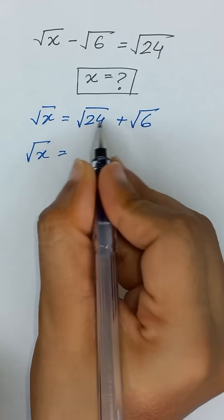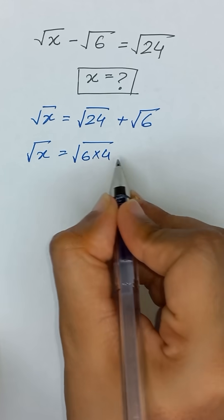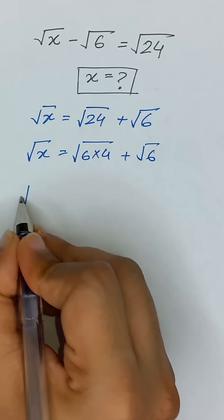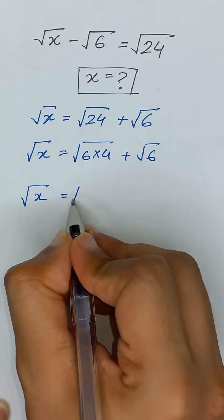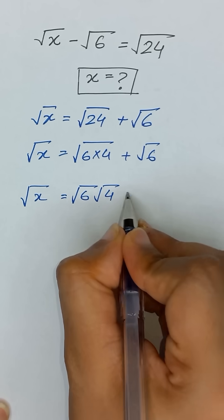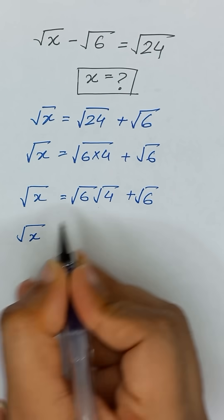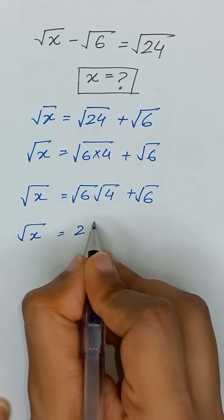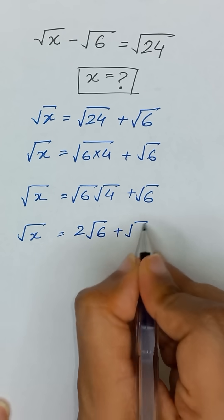Square root of 24 can be written as square root of 6 times 4, which equals square root of 6 times square root of 4. Since square root of 4 is the same as 2, it will become 2 times square root of 6 plus square root of 6.